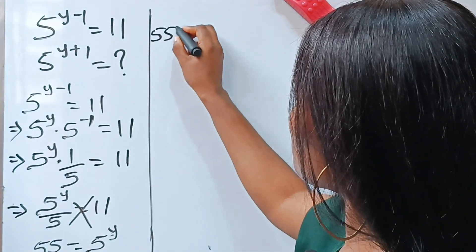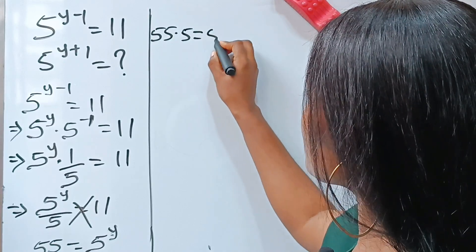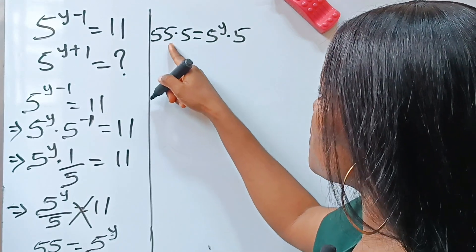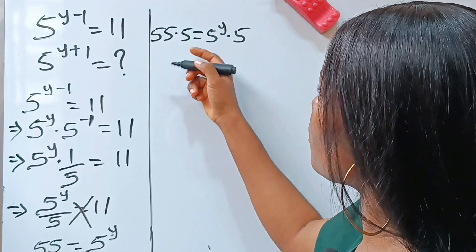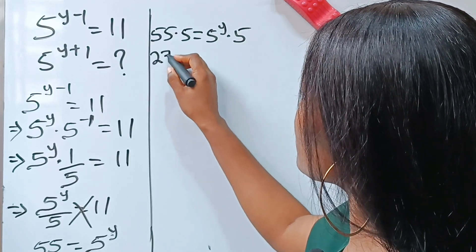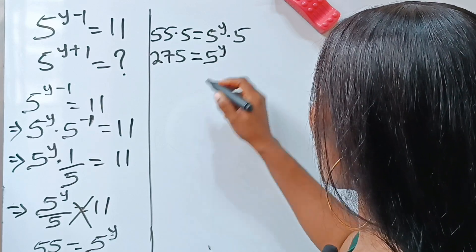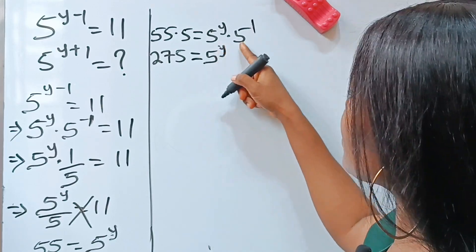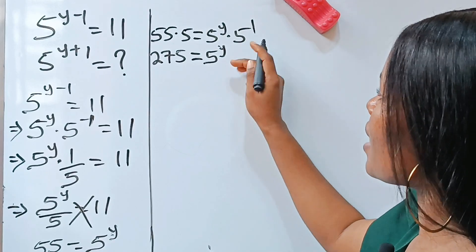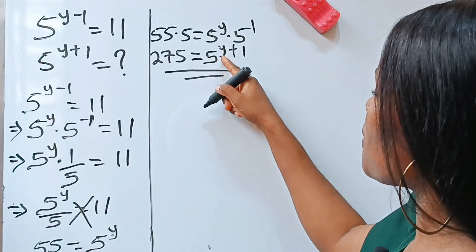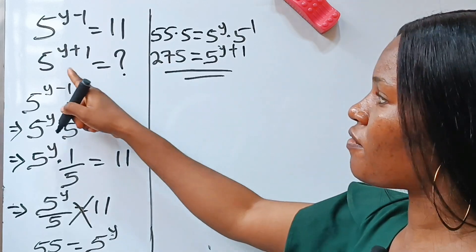If we do that, we have 55 multiplied by 5 is equal to 5 to the power of y multiplied by 5. Now, 55 multiplied by 5 will give us 275, equal to 5 to the power of y. Because they have the same base, we pick one base and add the power. That is y plus 1. So this simply means that 5 to the power of y plus 1 is 275.